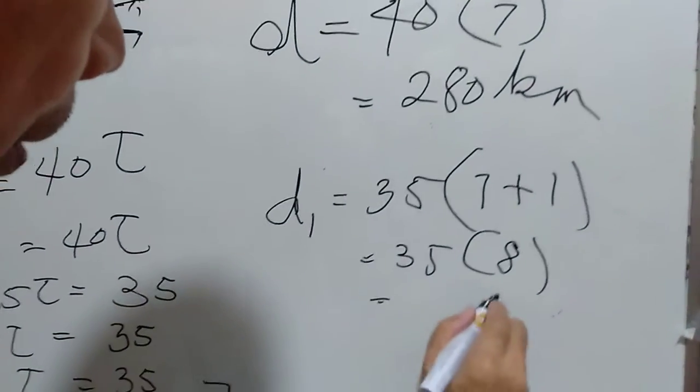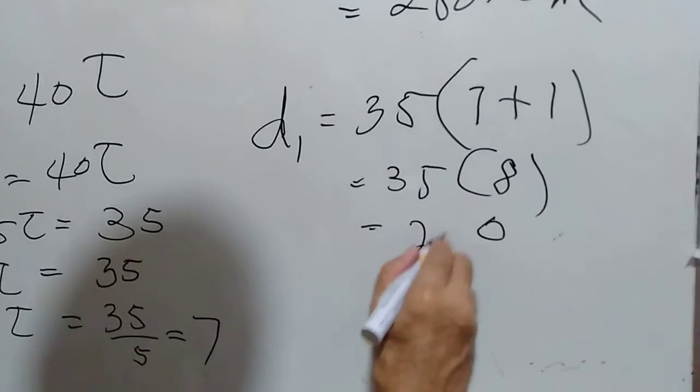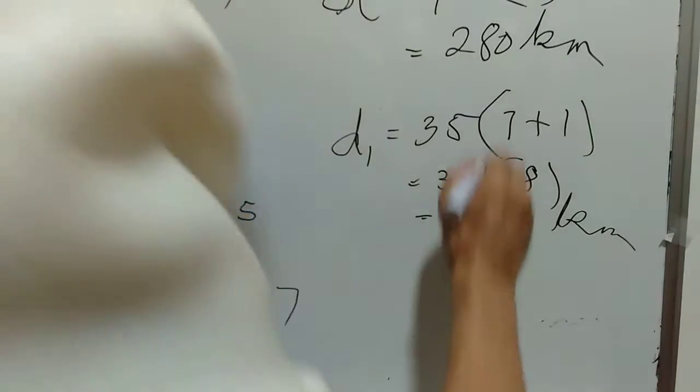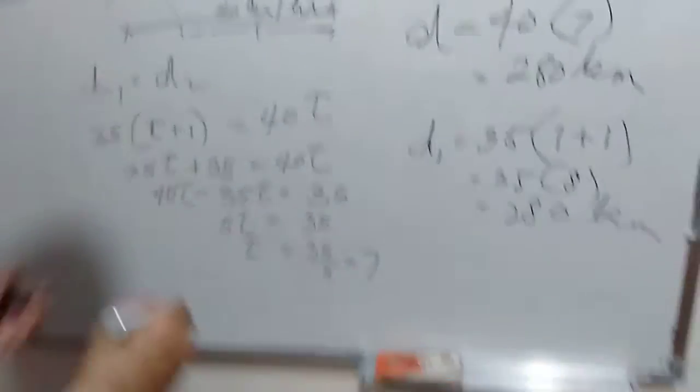And for train 2, that equals 280. They are equal. So this is our final answer: 280 kilometers. We will see you next time.